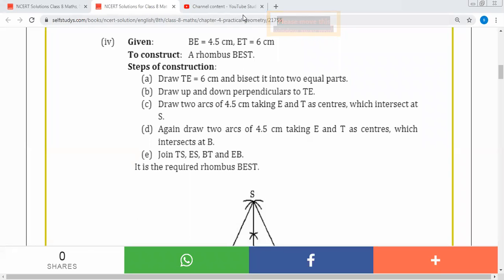BE is 4.5 cm, ET is 6 cm. All sides are equal in a rhombus, so we need to construct rhombus BEST.